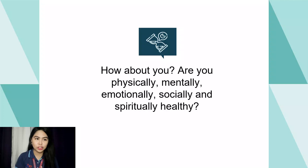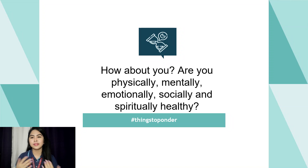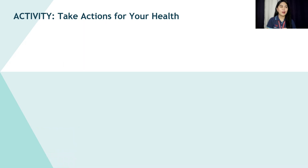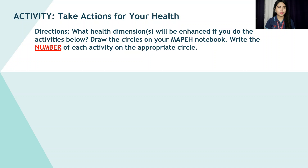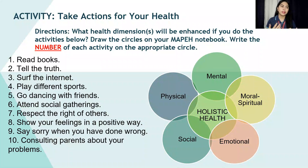How about you? Are you physically, mentally, emotionally, socially, and spiritually healthy? I'll give you a few moments to think about it. Let's see if you understand our lesson today. Let's proceed to our activity called Take Actions for Your Health. What health dimensions will be enhanced if you do the activities listed? Draw six circles in your MAPE notebook. Each circle represents a health dimension: mental, physical, moral, spiritual, emotional, and social. In the middle is the holistic health.